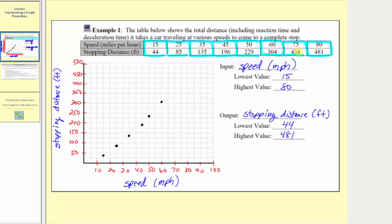Next ordered pair would be 75 comma 433. So here's the input of 75, up to 433, which is below 450. And the last ordered pair is 80 comma 481. So input of 80, output of 481, which would be approximately here.